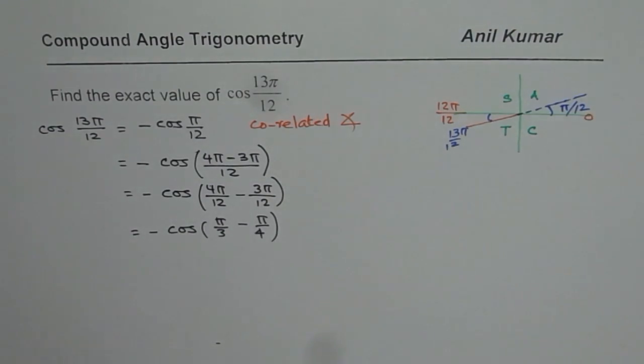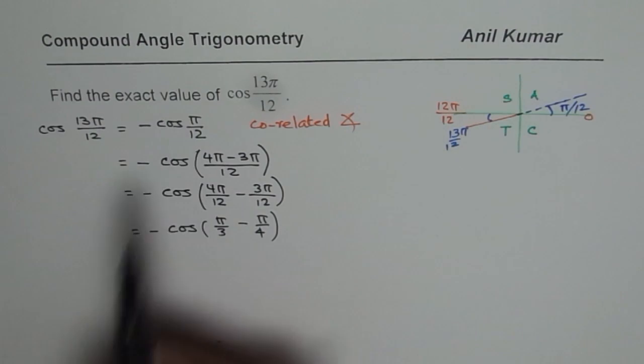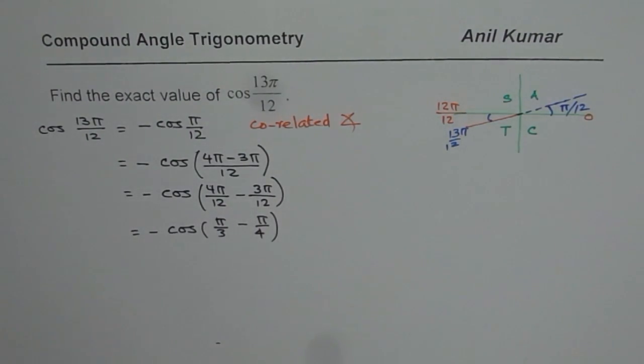So, that is what you get. Well, some of you could have written directly from here that cos π/12 is cos π/3 minus π/4. But I want to explain to you how easily we can actually get the combination.